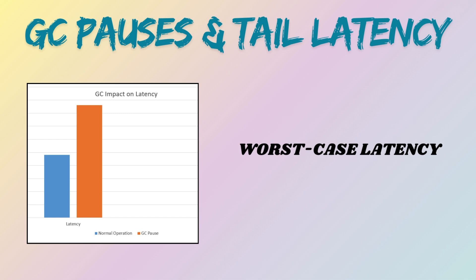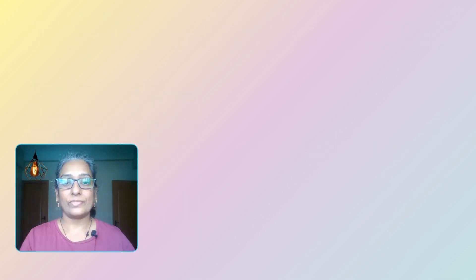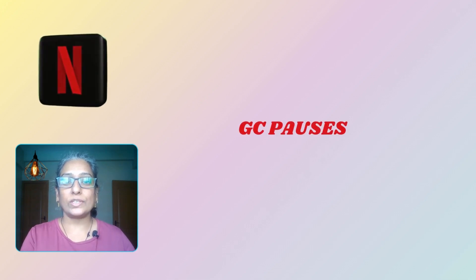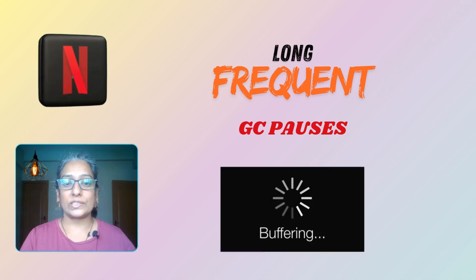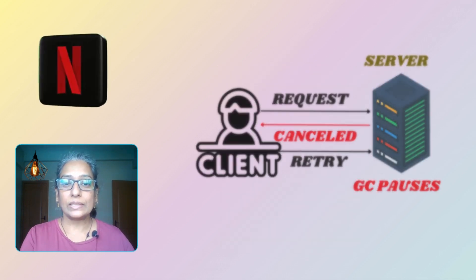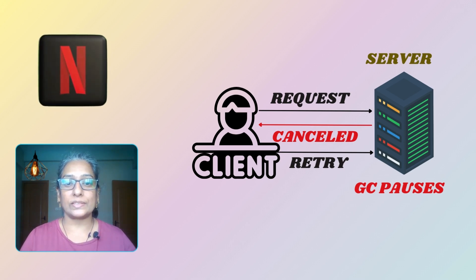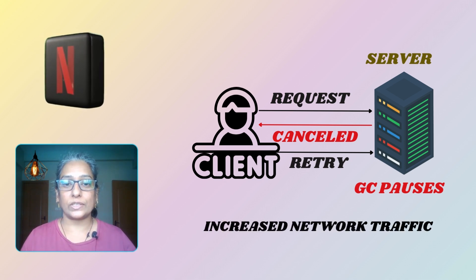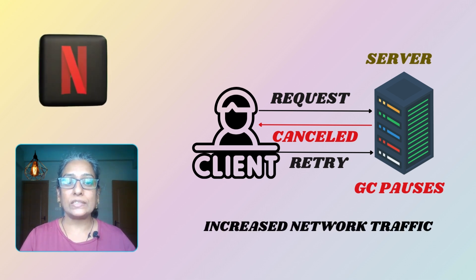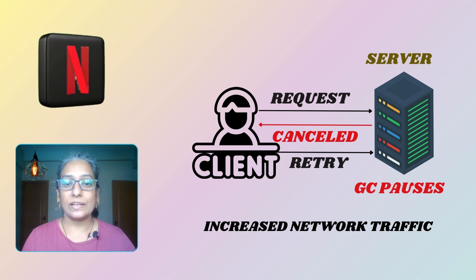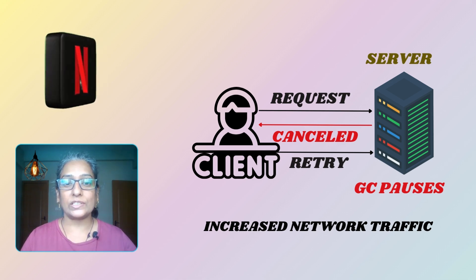Tail latency refers to the worst-case latency experienced by users. In Netflix's case, G1GC pauses were both frequent and long, significantly impacting user experience. These GC pauses often led to request cancellations and retries, causing an increase in overall service traffic. To maintain high service reliability and performance, Netflix needed an efficient GC mechanism.